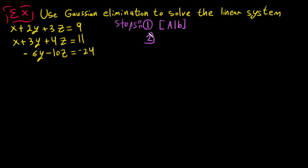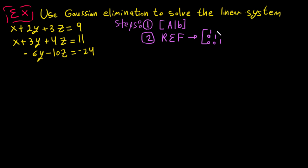Step two: we have to write it in REF, which is Row Echelon Form. It looks like this — with leading ones, and zeros below each leading one. The other entries do not need to be zero. This is our REF.